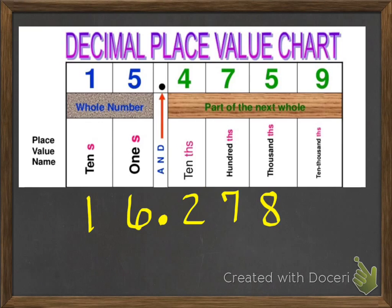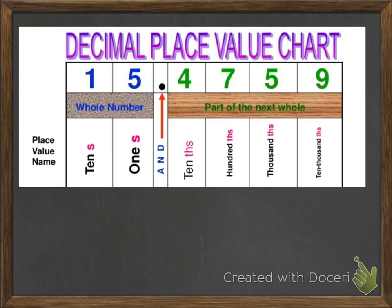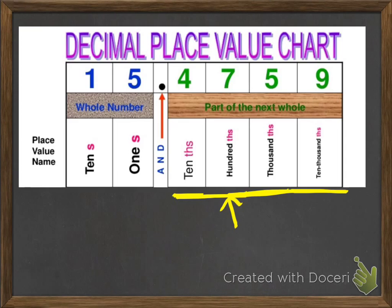Looking at the next example, you would read this number as 16 and 278 thousandths. One spot after your decimal point is your tenths column, two spots is your hundredths, three spots is your thousandths, and four spots is your ten-thousandths. It does keep going forever, but these are the main ones we want to be comfortable with before moving on into the rounding part.